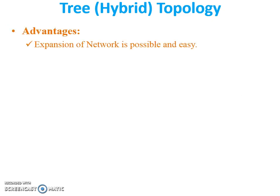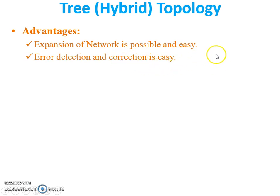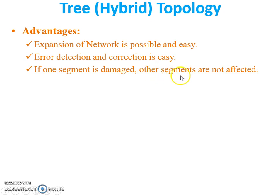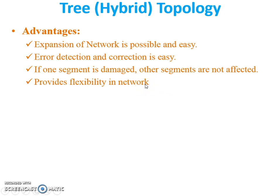Advantages of tree topology: First, expansion of the network is possible and easy. Second, error detection and correction is easy — because if one star segment fails, the error is localized to that particular star segment. Third, if one segment is damaged, the other segments are not affected; if any one star topology is damaged, the other star topologies have no issue and can work perfectly. Fourth, it provides flexibility in networks — there is a flexible network in which hybrid topology is used.